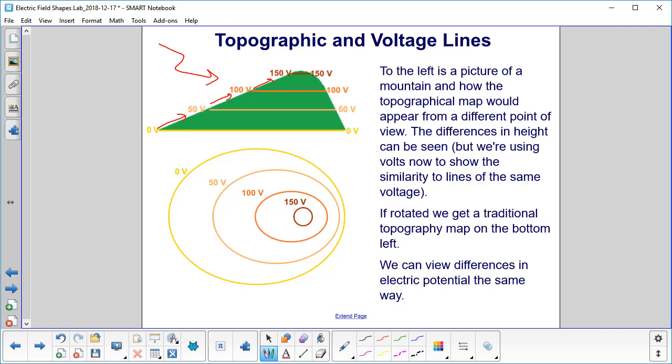We've also labeled them volts because we're going to start transitioning into lines of voltage. We are now going to rotate this, so we look at it from top down, and then we get something similar to the topographic map from the previous slide.